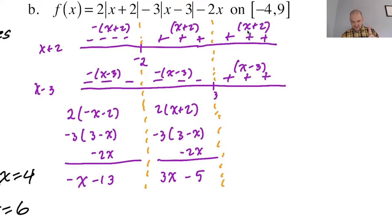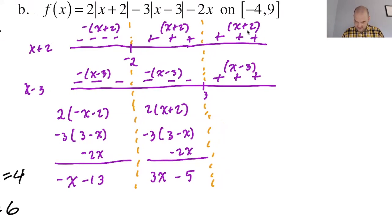Now at x equals negative 2, these should give you the same value. So here it would be 2 minus 13 is negative 11. Here would be negative 6 minus 5, negative 11. So it's looking good. We have continuity there.